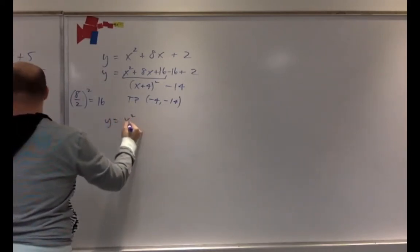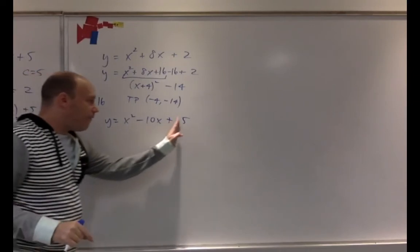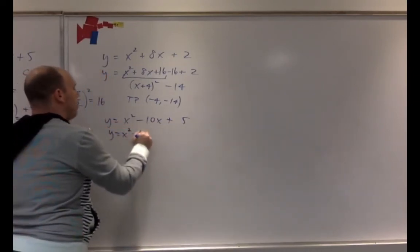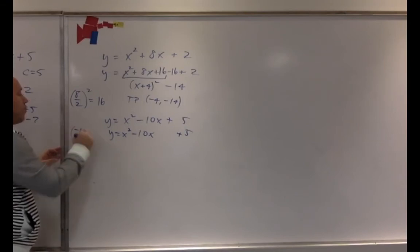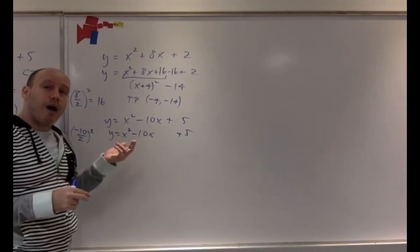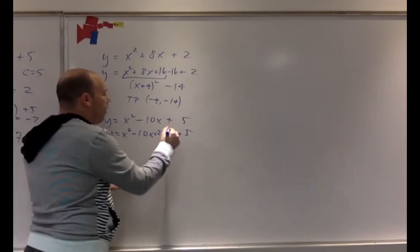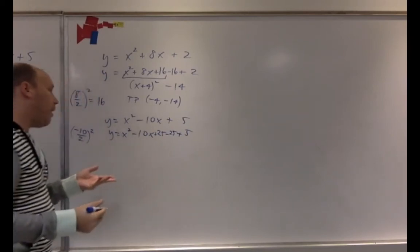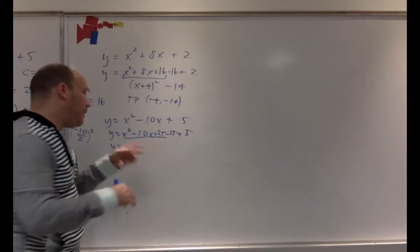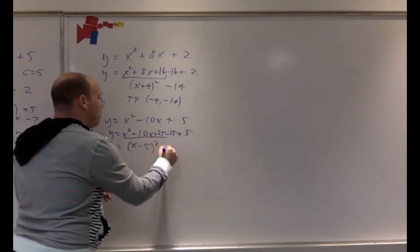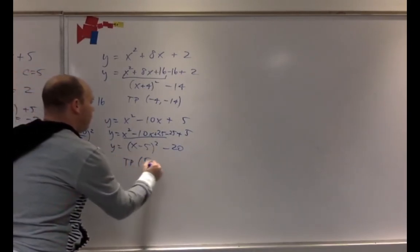Let's try another problem: Y equals X squared minus 10X plus 5. Step 1: move the 5 aside. Step 2: take negative 10, divide by 2, and square it — negative 10 divided by 2 is 5, squared is 25. Add 25 and subtract 25 to maintain balance. The result: you recognize this as (X minus 5) squared minus 20. The turning point is 5, negative 20.